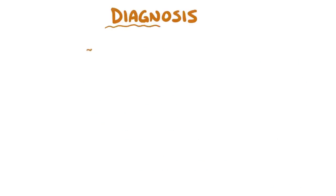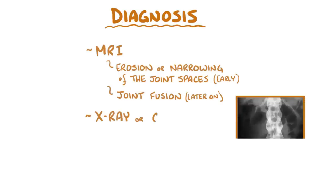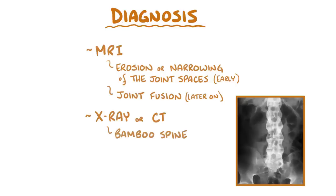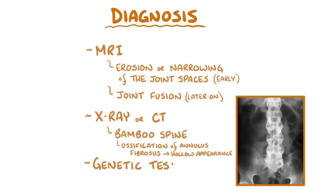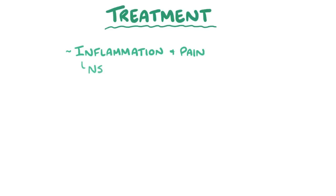Ankylosing spondylitis can be diagnosed using MRI, where there's typically erosion and narrowing of the joint spaces early on, and joint fusion later on. An x-ray and CT often show a bamboo spine, which is caused by the ossification of the annulus fibrosis on the outside of a straightened spine, giving it a hollow appearance. Genetic testing for HLA-B27 can be done to help confirm the diagnosis.